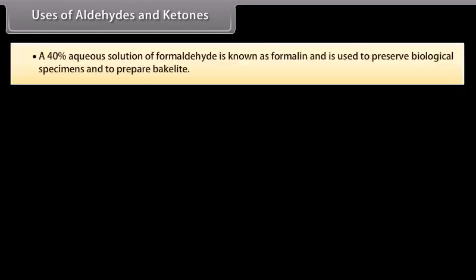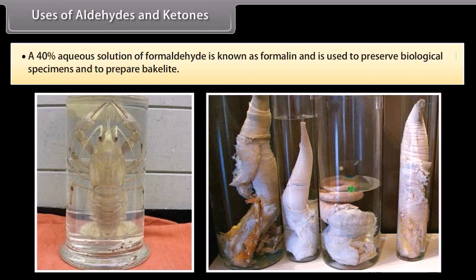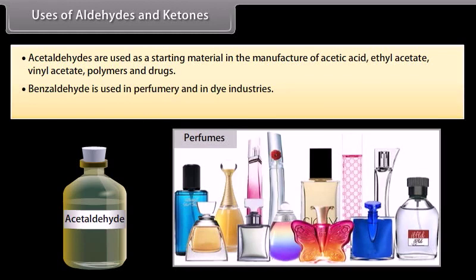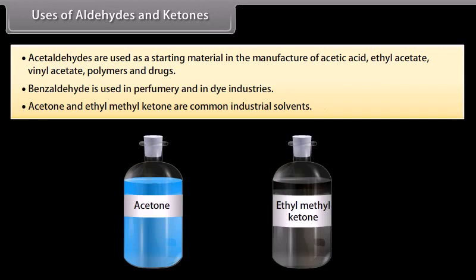Uses of aldehydes and ketones: a 40% aqueous solution of formaldehyde is known as formalin and is used to preserve biological specimens and to prepare bakelite. Acetaldehydes are used as a starting material in the manufacture of acetic acid, ethyl acetate, vinyl acetate, polymers, and drugs. Benzaldehyde is used in perfumery and in dye industries. Acetone and ethyl methyl ketone are common industrial solvents.